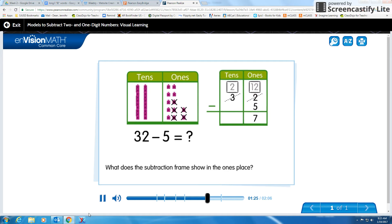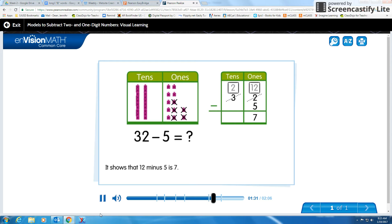What does the subtraction frame show in the ones place? It shows that twelve minus five is seven.